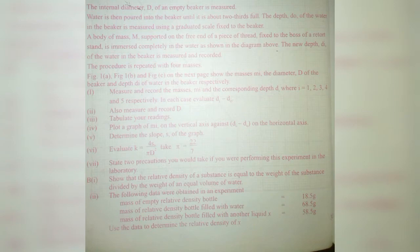The procedure is repeated for four other masses. Don't forget, it's an alternative to practical, so we take the value of the masses from another diagram. You can see figure 1a, figure 1b, and figure 1c. We are going to check how to determine the masses from the diagram. The masses mᵢ, the diameter d of the beaker, and depth dᵢ of water will all be taken from the diagram.